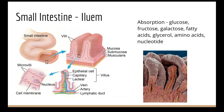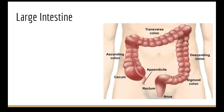In the ileum, all monomers are absorbed: glucose, fructose, and galactose from carbohydrates; fatty acids and glycerol from lipids; amino acids from proteins; and nucleotides — all the monomers are taken up here.